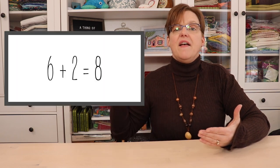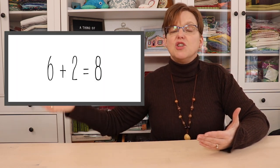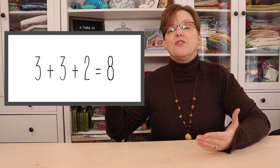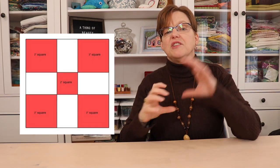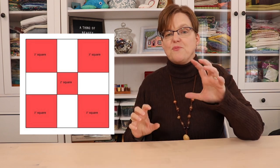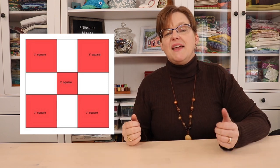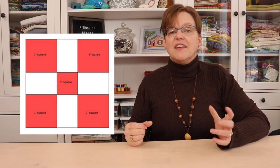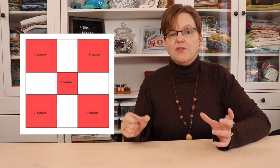Another option is to make the center square smaller than the other pieces. I could think of eight inches as six plus two, which also equals three plus three plus two. So I can make my center square two inches and my corner squares three inches — this will also give me an eight-inch block. In this case, my background rectangles would be three inches by two inches, and I'll cut them three and a half by two and a half to include the seam allowance.